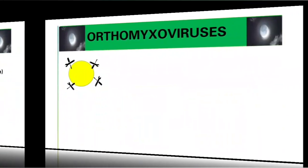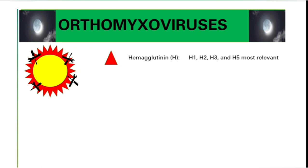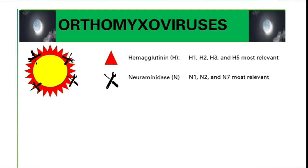Now let's talk about the envelope glycoproteins of the influenza viruses. They have a spike glycoprotein specifically called hemagglutinin — the important subtypes are H1, H2, H3, and H5. There is another glycoprotein known as neuraminidase, with three important subtypes: N1, N2, and N7.